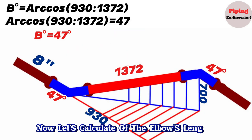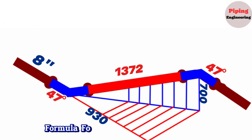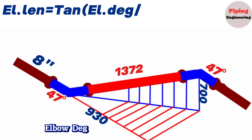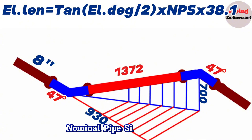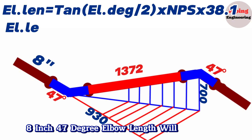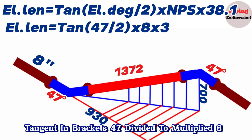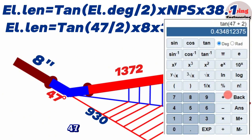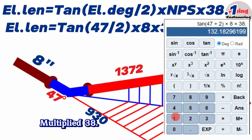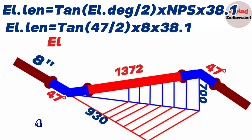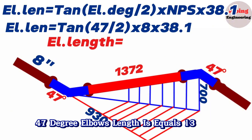Now let's calculate the elbows' length from center to end dimension. The formula for calculating center-to-end distance of cut elbows is: Elbow length (mm) = tangent(elbow degree ÷ 2) × NPS × 38.1. For the 8-inch 47-degree elbow: length = tan(47 ÷ 2) × 8 × 38.1. Using a scientific calculator, tan(23.5°) × 8 × 38.1 equals 132.5mm. So the 8-inch 47-degree elbow's length is 132.5 millimeters.